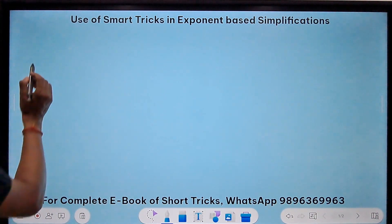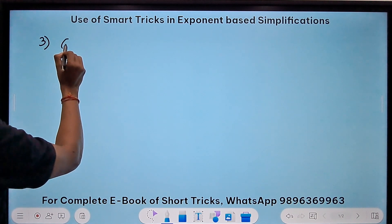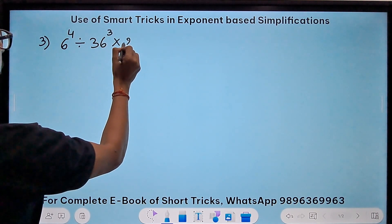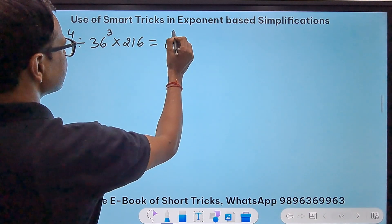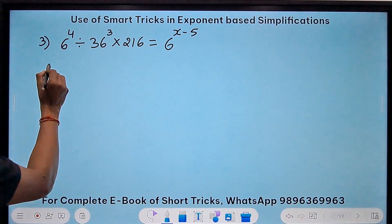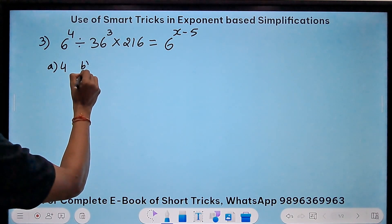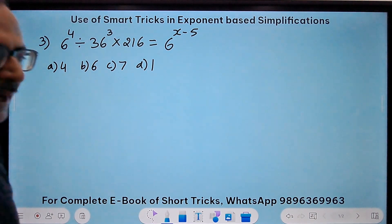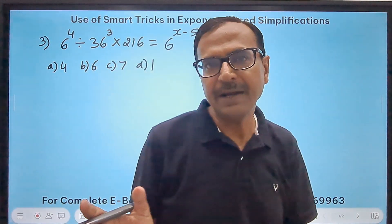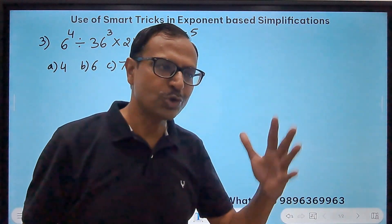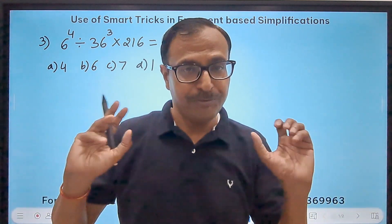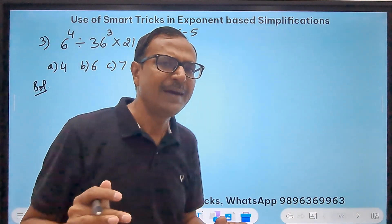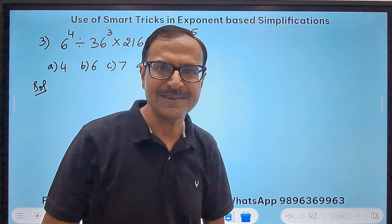So if I want to take up another question, this is having 6^4 and then it is divided by 36^3 and multiplied by 216, and this is equal to 6^(x-5). So I need to find the value of that something. So the options are a) 4, b) 6, c) 7, d) 1. Well the question sounds again a little bit easier, on the easier side, and so that is why since this is the beginning of the application of short tricks on simplification problems, I am not taking up very huge problems. So how many of you can do that orally? Just pause the video here and try it and play it from here if you don't get it or you want to verify your answer.